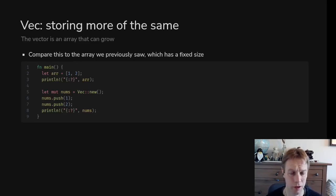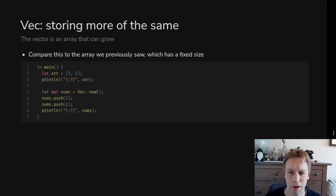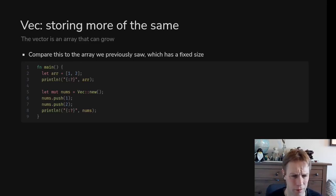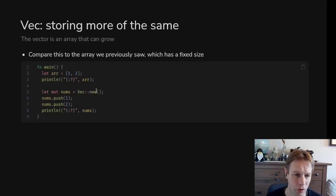We previously saw arrays — you make an array with square brackets and a list of things. In some languages like Python, something like that is really flexible; you can add things to it later. But in Rust, an array is fixed size — you can refer to it but you can't change it. If you want a changeable-size list, you use a Vec. You make a Vec with `vec::new()` and add things with `push`, then print its contents. It's essentially a changeable-size array.